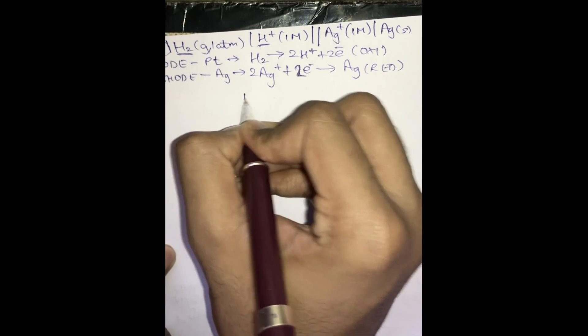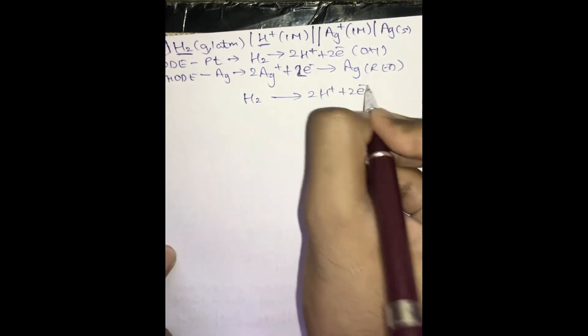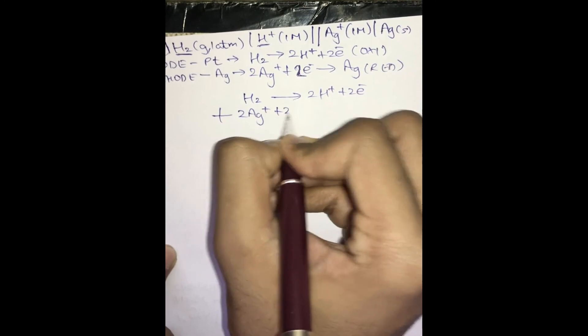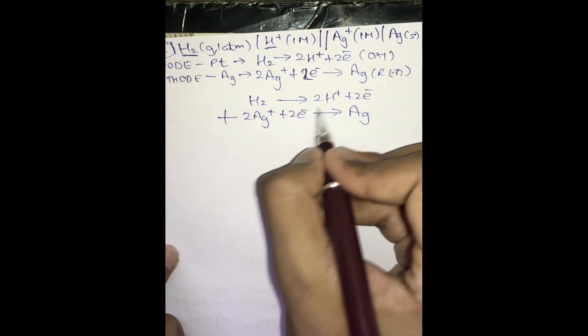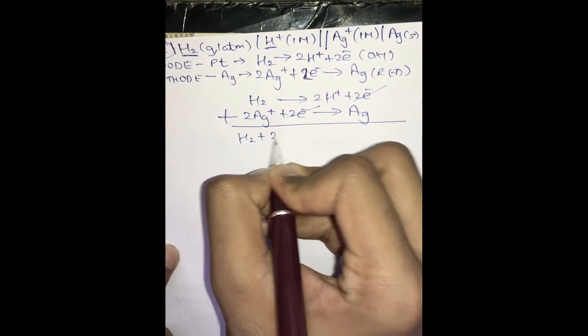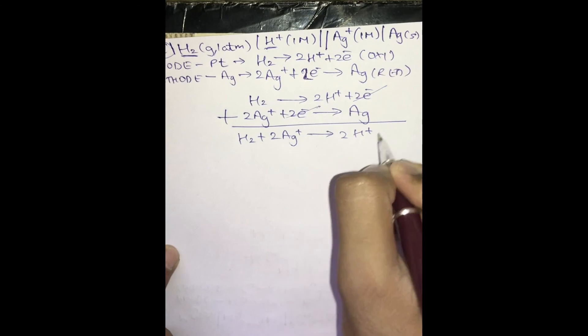The complete reaction is the addition of oxidation and reduction. Adding the left-hand side and right-hand side: H₂ → 2H⁺ + 2e⁻, and 2Ag⁺ + 2e⁻ → 2Ag. The two electrons cancel, and the complete reaction is: H₂ + 2Ag⁺ → 2H⁺ + 2Ag. This was all about how to write a cell reaction when a cell representation is given.